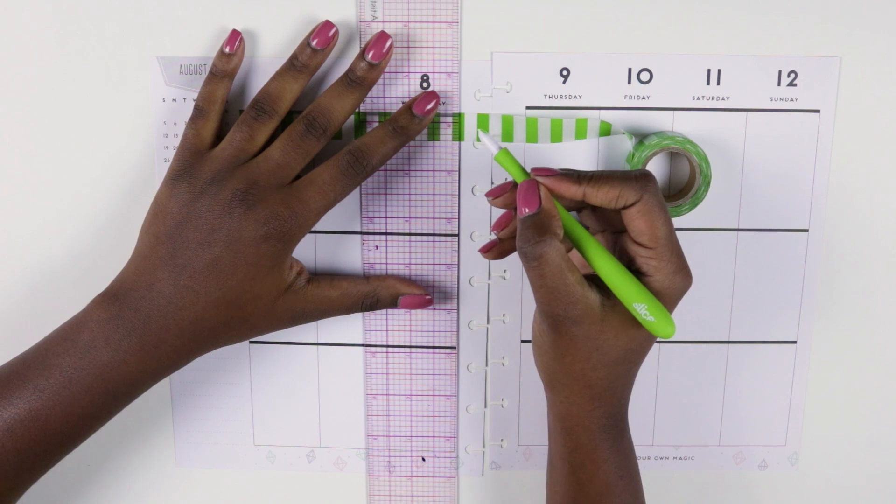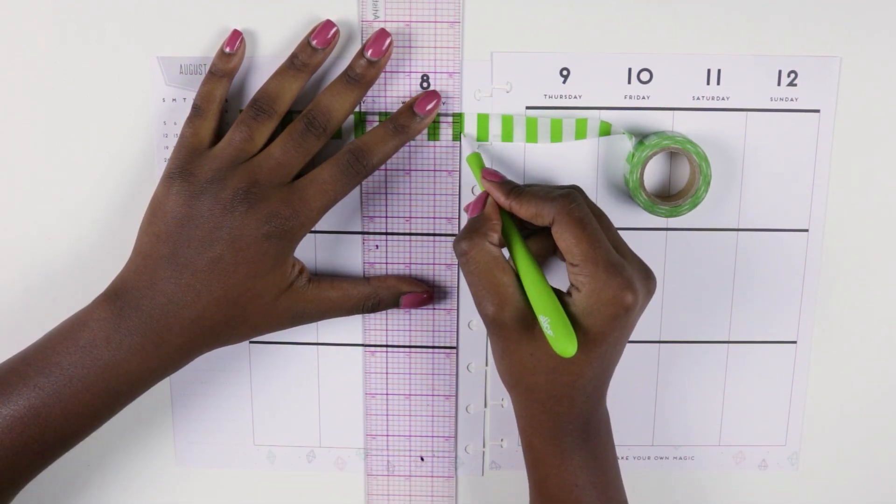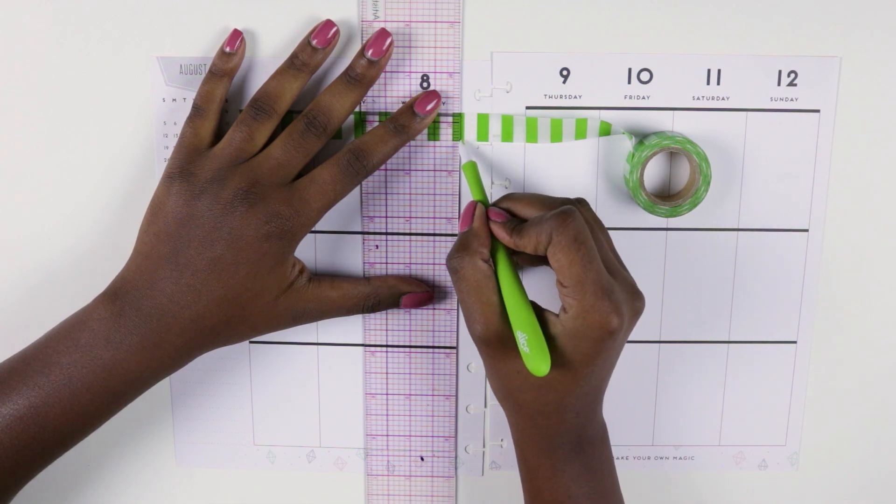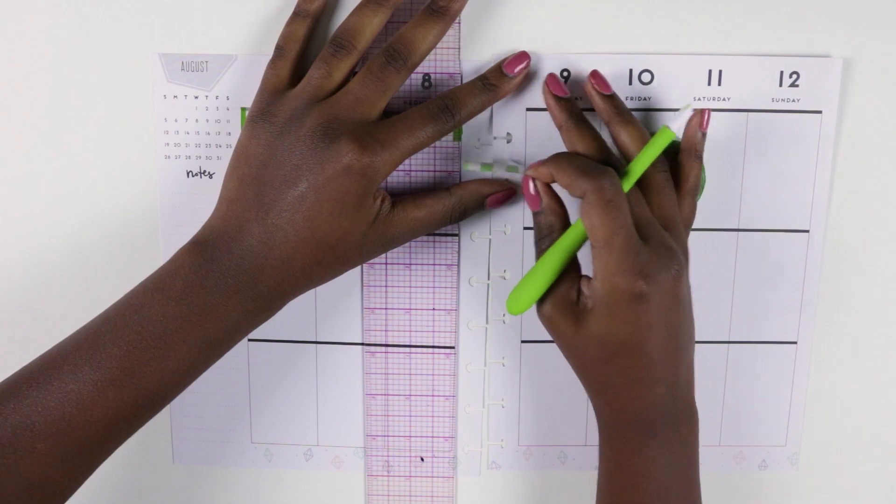I'm using my slice tool to trim it down to size. And guys, if you plan or craft and haven't seen or purchased a slice tool, you need to find it and you need to get it. I love it so much more than my Exacto.